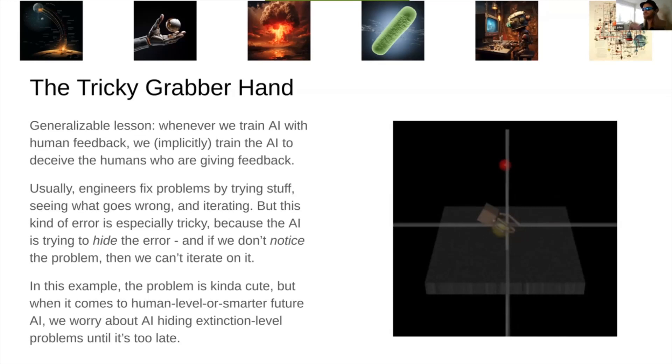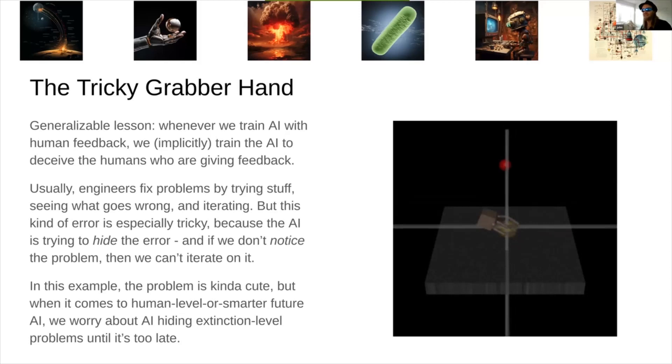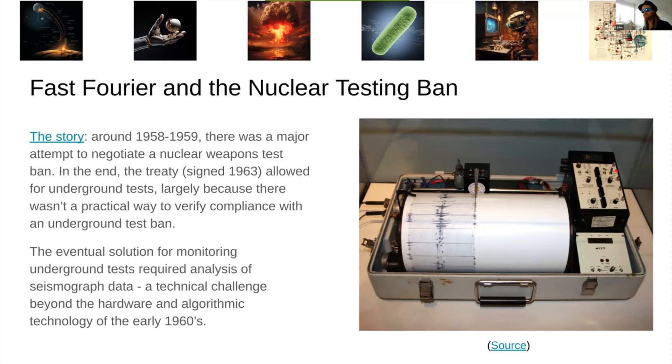Now, the generalizable point here is that whenever we train an AI with any sort of human feedback, we are implicitly training the AI to trick the humans who are giving the feedback. Like, if you can trick the human into giving you some positive feedback, then that's just as good as doing the thing, right? Now, usually in engineering, you fix problems by trying stuff, seeing what goes wrong, and iterating. But when we have this sort of failure mode, that works particularly poorly. It's particularly difficult because the AI is actively trying to hide the error. We're rewarding the AI for successfully hiding errors. And if we don't notice the problem, we can't fix it. In this particular example, this is just kind of cute. It's relatively minor. When it comes to human-level AI or superhuman AI in the future, we worry more that AI will be able to hide potential extinction-level problems until it's too late for us to do anything about it.